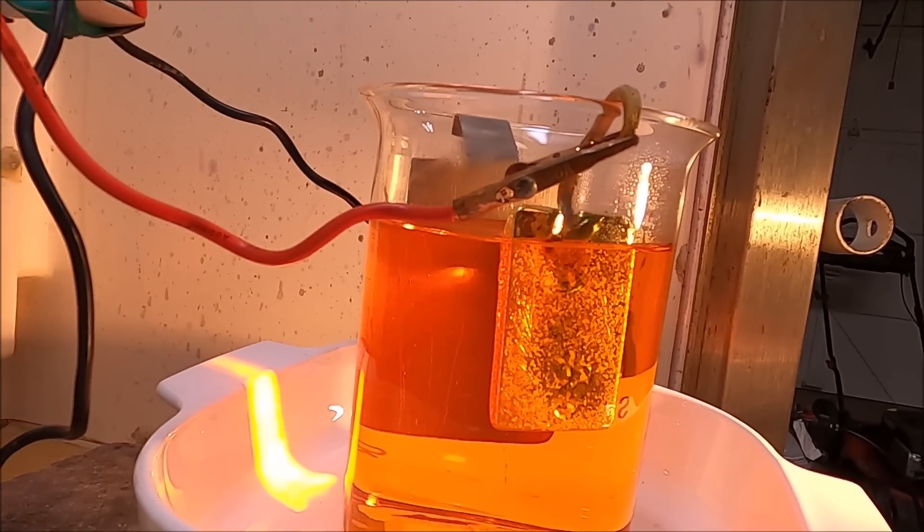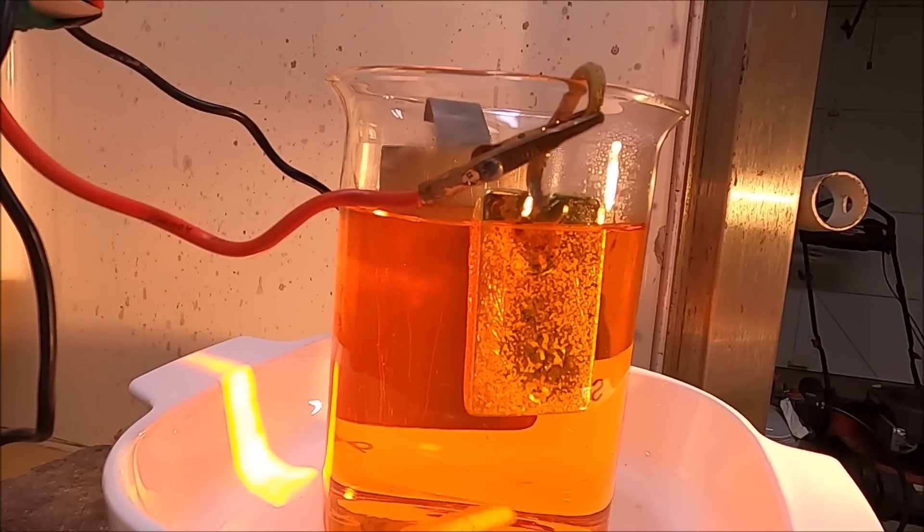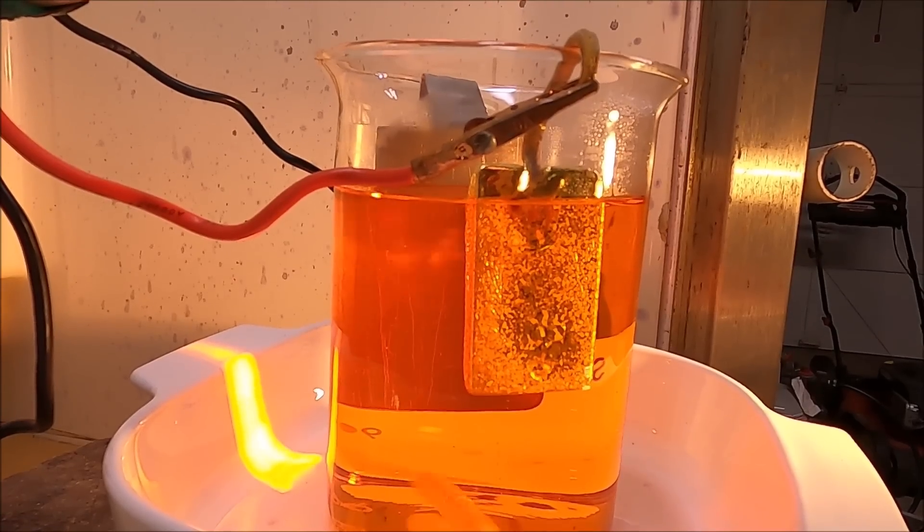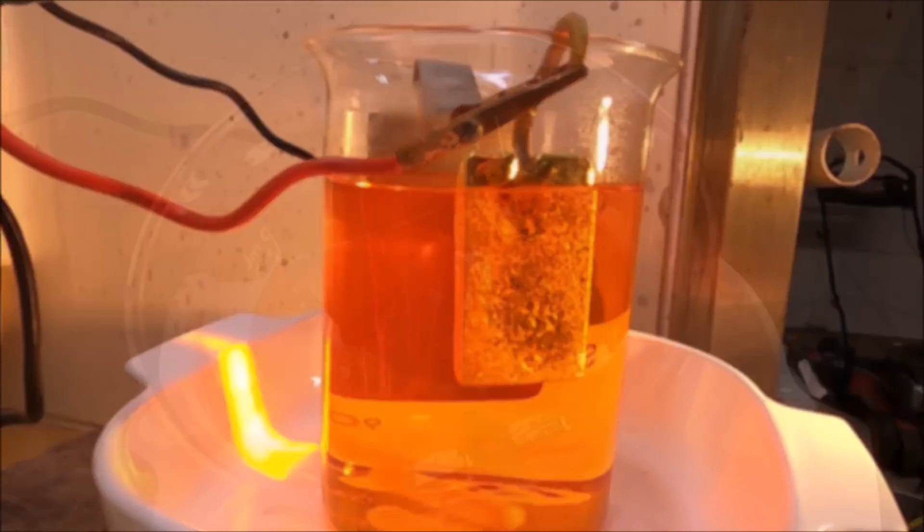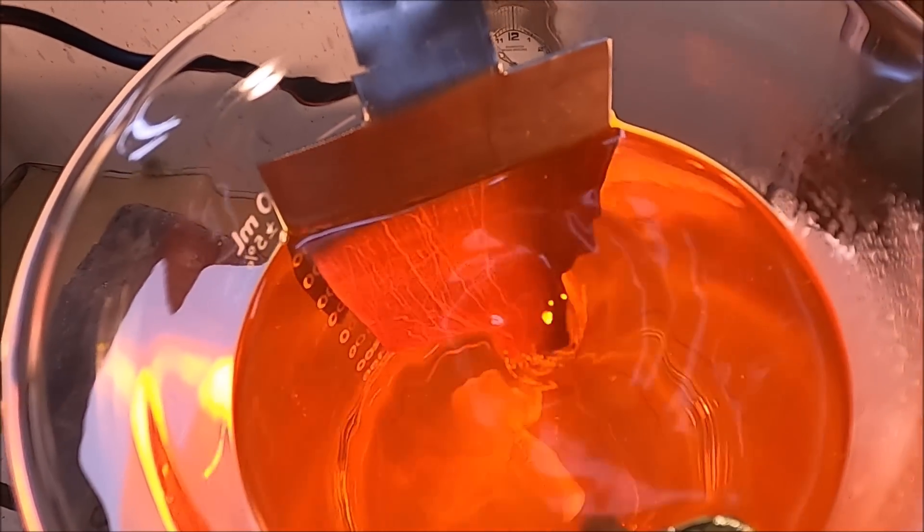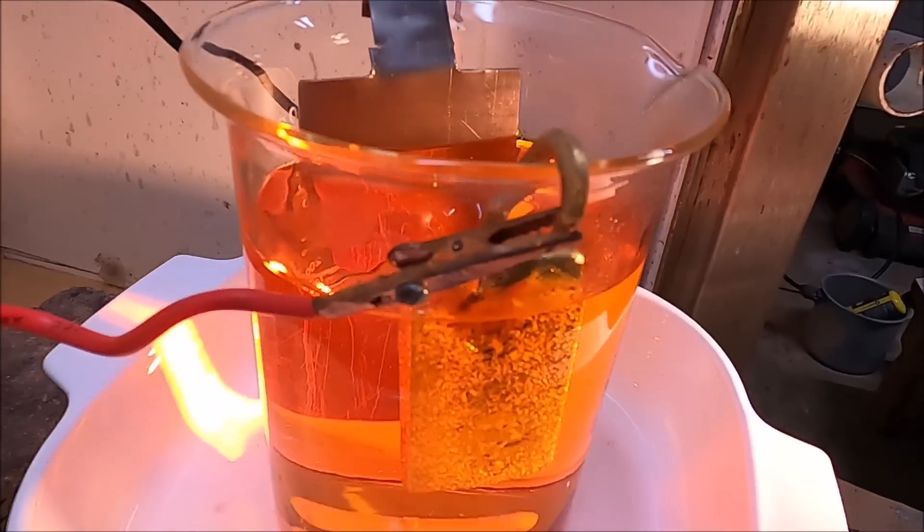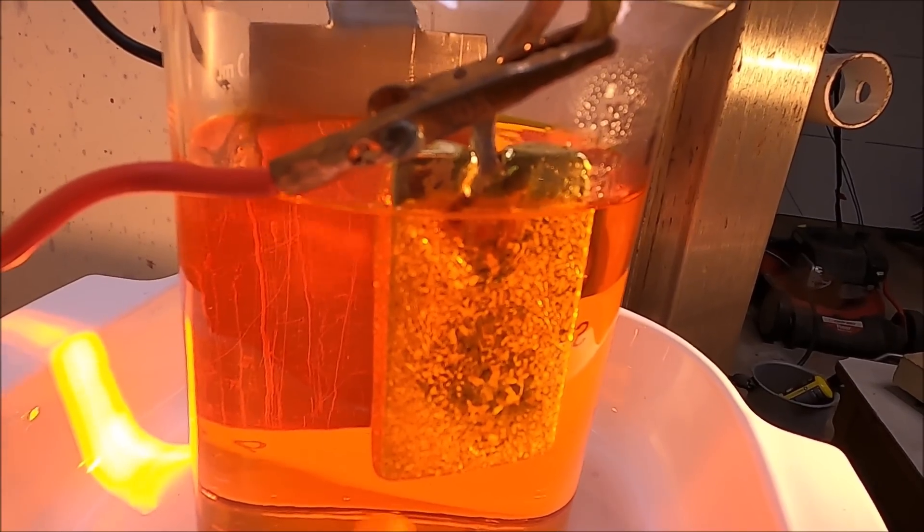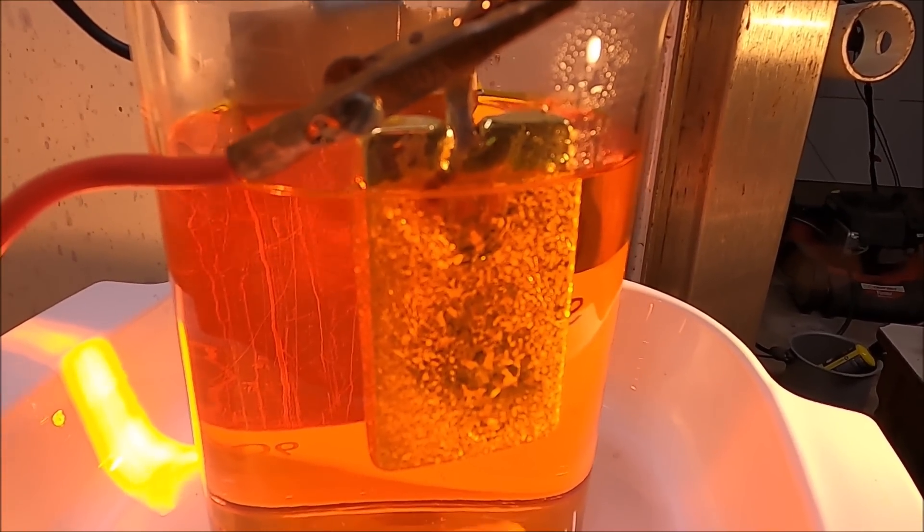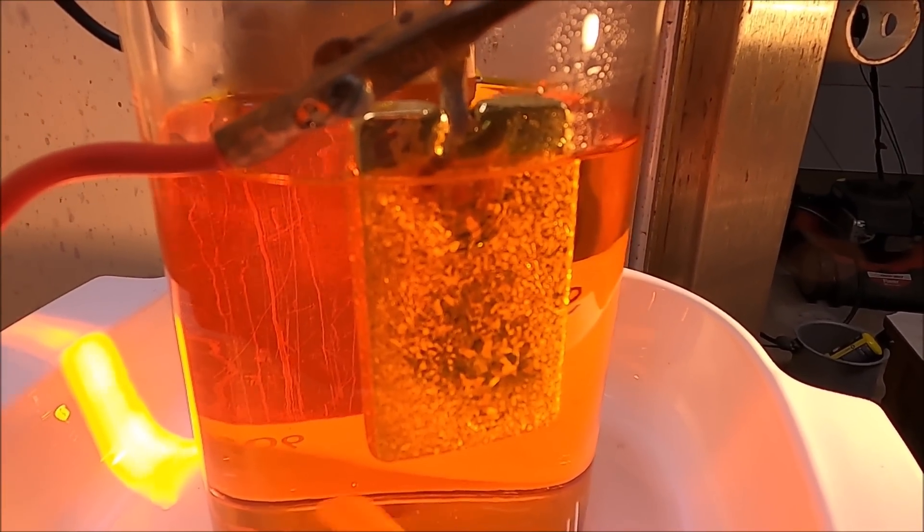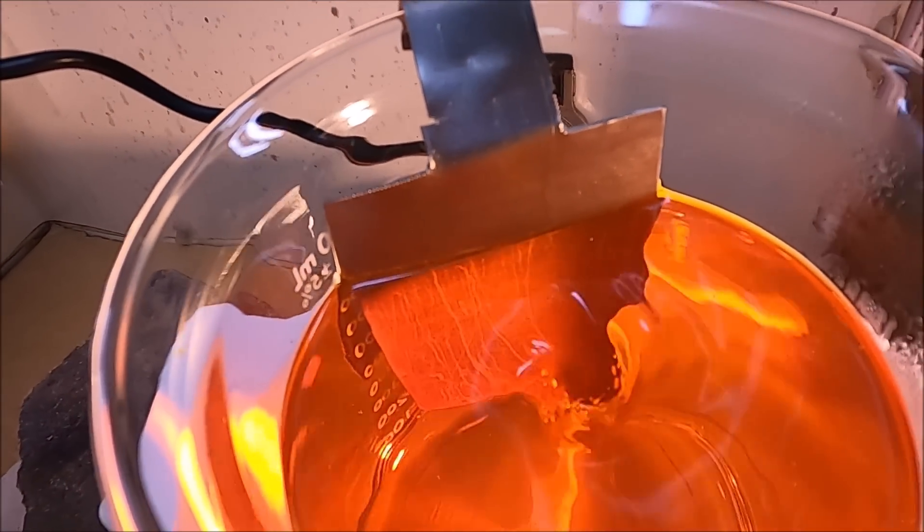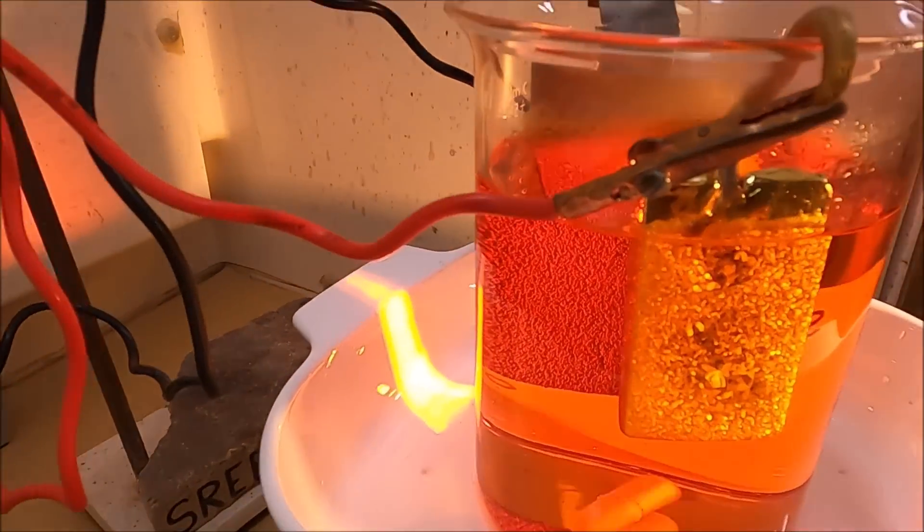We should get a noticeable change on that cathode as the gold dissolves off of the anode bar, travels through the electrolyte, and begins to deposit on the titanium cathode. I'm noticing a difference in the appearance of the cathode as the gold begins to deposit. Plus, the anode bar is starting to look like a crystalline structure as it dissolves from the electrolytic action.